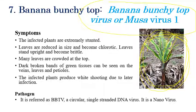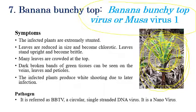Other symptoms of banana bunchy top include: reduced length and width of leaves, yellowing of leaves, and a bunchy or bushy crowded-like appearance of leaves. Infected plants produce white shooting-like appearance. Dark brown bands and alternate green and yellow patches can be seen. Infection can also be seen in veins, leaves, and petioles. Banana bunchy top virus is a circular single-stranded DNA virus.